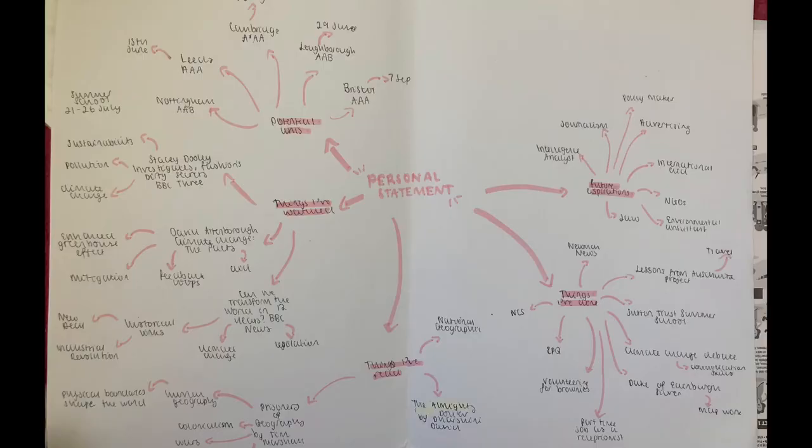Now I'll go through the timeline of when I started thinking about my personal statement and when I eventually put it in, because I would have loved to know this when I was in year 12. Around about now I started really thinking about my personal statement. I would say around about this time, start mind mapping or just making a list of things you've done that you could possibly put in your personal statement, or things you could do over summer to put in your personal statement.